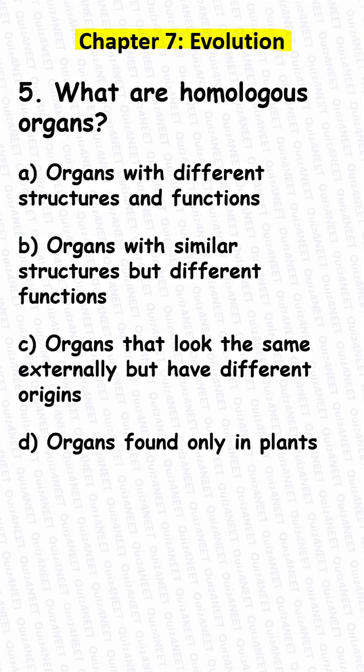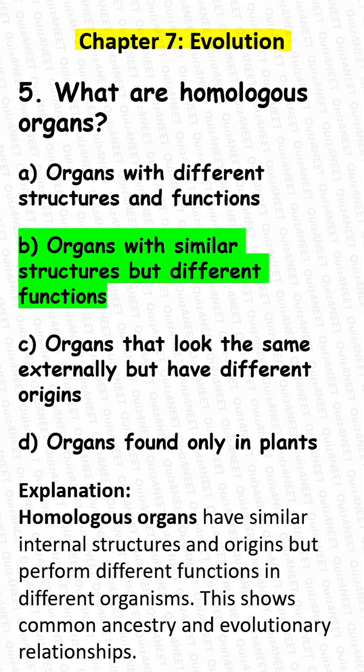Question 5. What are homologous organs? A. Organs with different structures and functions. B. Organs with similar structures but different functions. C. Organs that look the same externally but have different origins. D. Organs found only in plants.